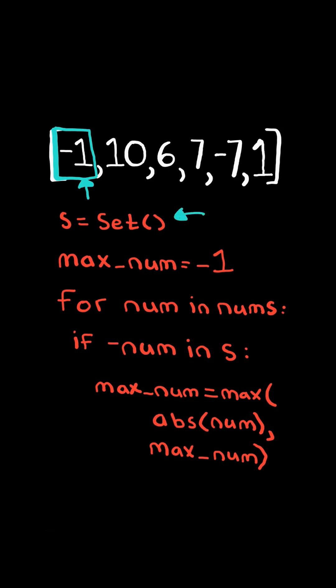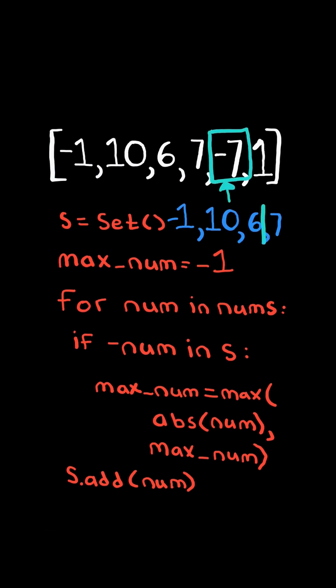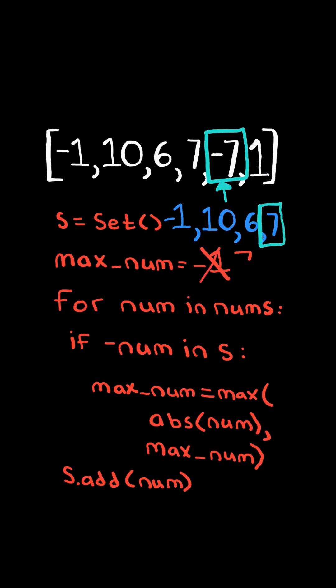In this case, our set is empty, so we just add the current number to our set and we continue. Eventually, we will come across a number where its negative also exists in the set, so we update max num.